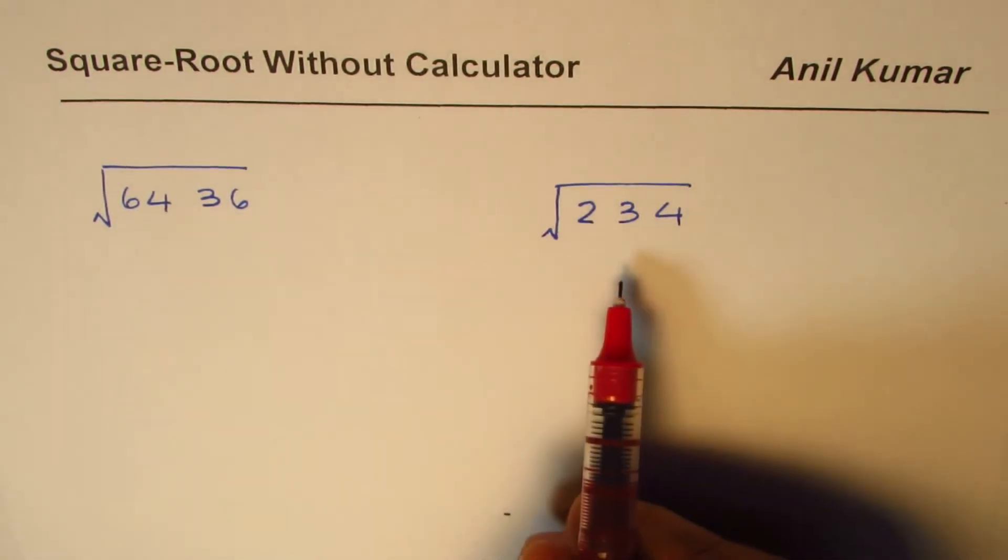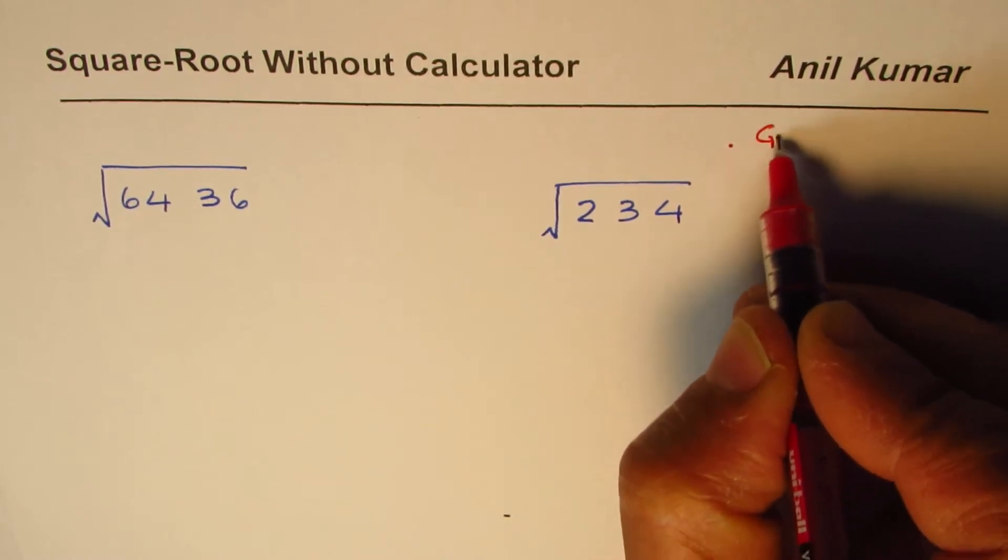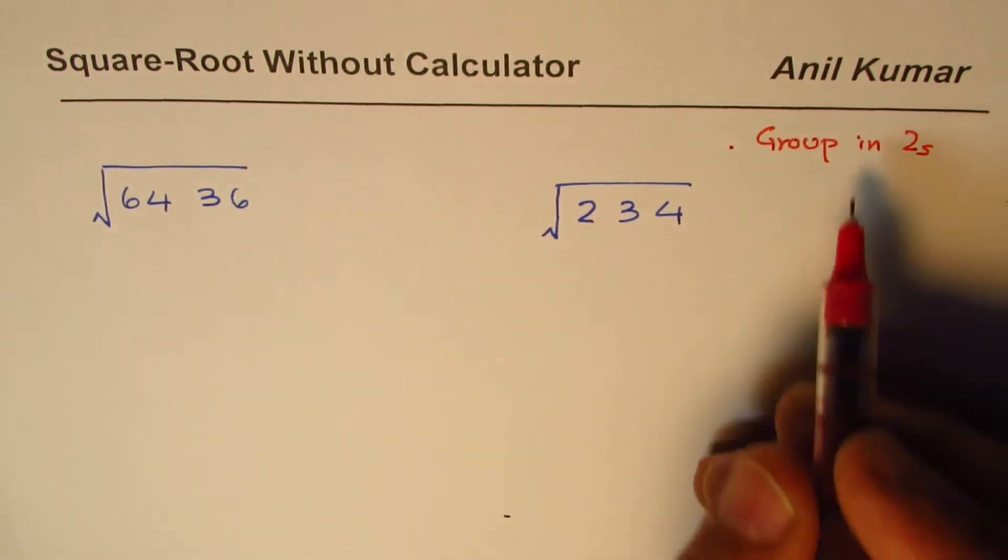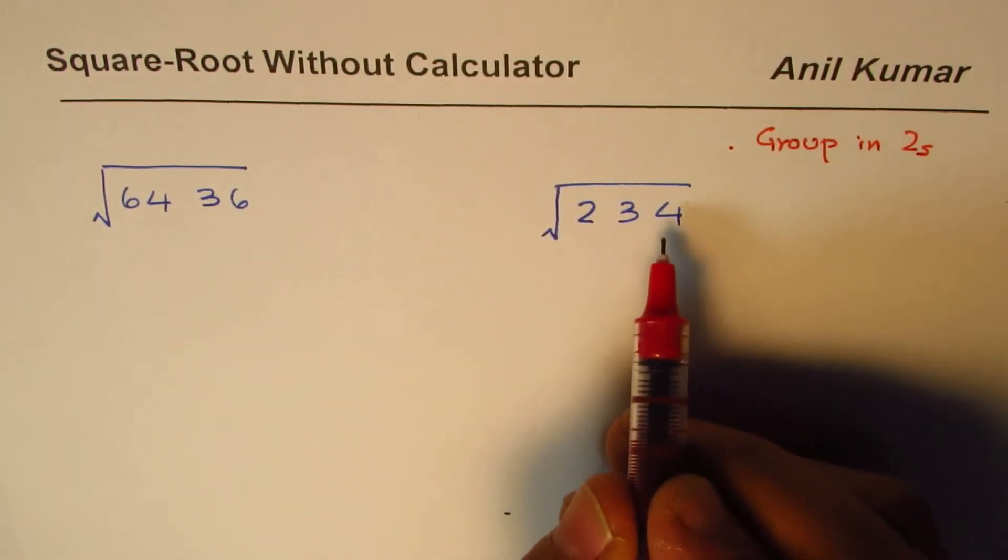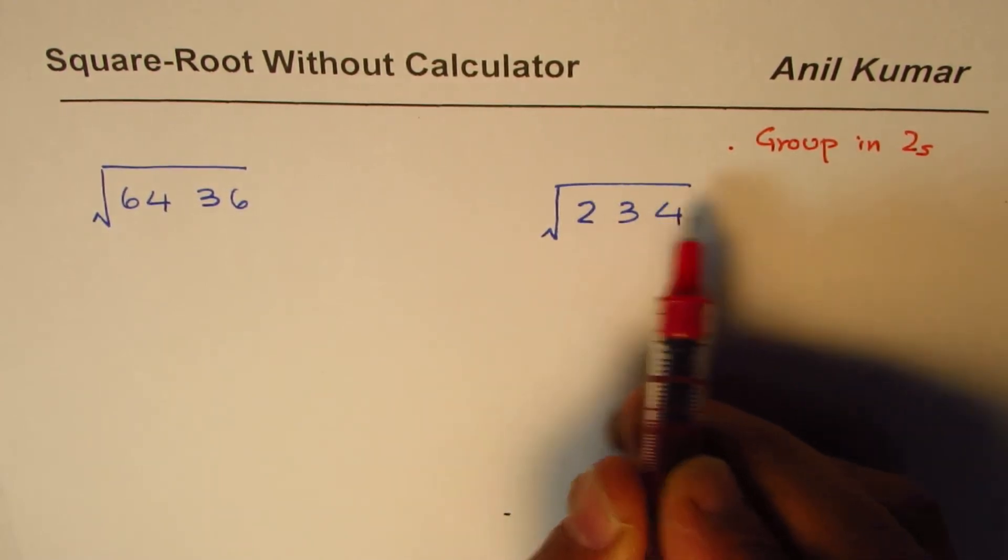First thing is whenever you want to find square root of any number, you need to group them in twos. So that is the first step - grouping in twos, that means set of twos.